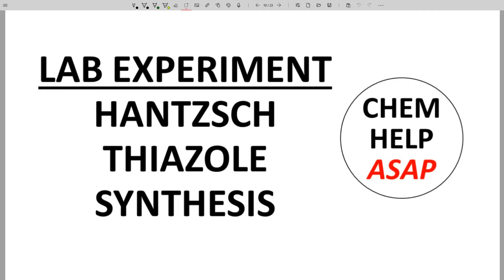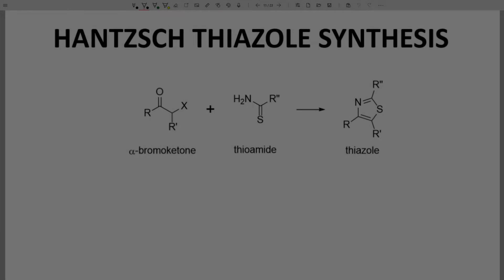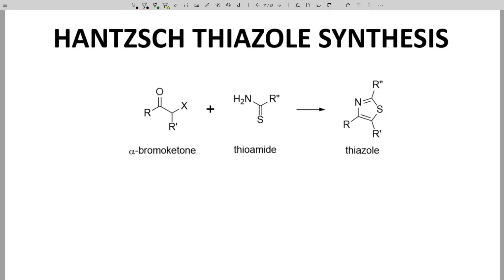Good day from Chem Help ASAP. In this video, we will perform a Hantzsch Thiazole Synthesis. This is one of the very old reactions in organic chemistry. The video description contains links to supporting documents, including the laboratory procedure and proton NMR spectra. On the screen is a model Hantzsch Thiazole Synthesis. Let's start with the product. This five-membered ring with a nitrogen and sulfur is called a thiazole. This molecule satisfies Hückel's rules and is aromatic. It is very stable.